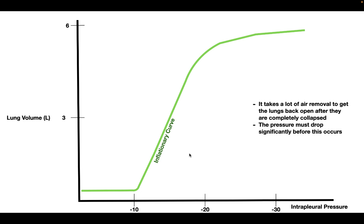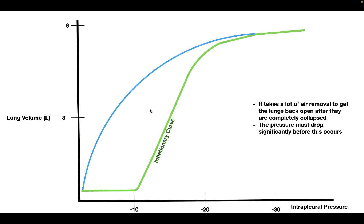Now what if we were to do the opposite? What if we were to take a fully inflated lung, increase the intrapleural pressure, and cause it to collapse? That limb would look something like this. Starting from a fully inflated lung and increasing the intrapleural pressure, we see that lung volume starts to decrease, but this curve looks a lot different than the inflationary curve. The difference between these two curves is called hysteresis. This curve is called the deflationary limb, and we're going to talk about why these two curves differ in shape.